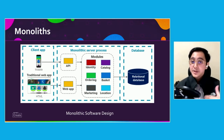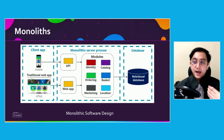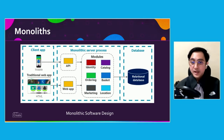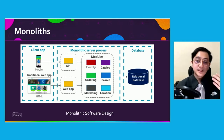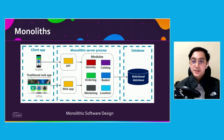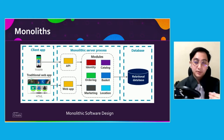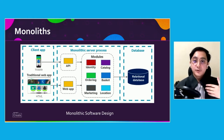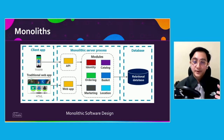For example, in the case of an online shopping application — maybe something like Amazon — you would have different modules for identity, catalog, basket, and ordering, and so on. This huge application would then connect to a web application or APIs, so things like mobile apps or web browsers so we can access our online shopping on the go.